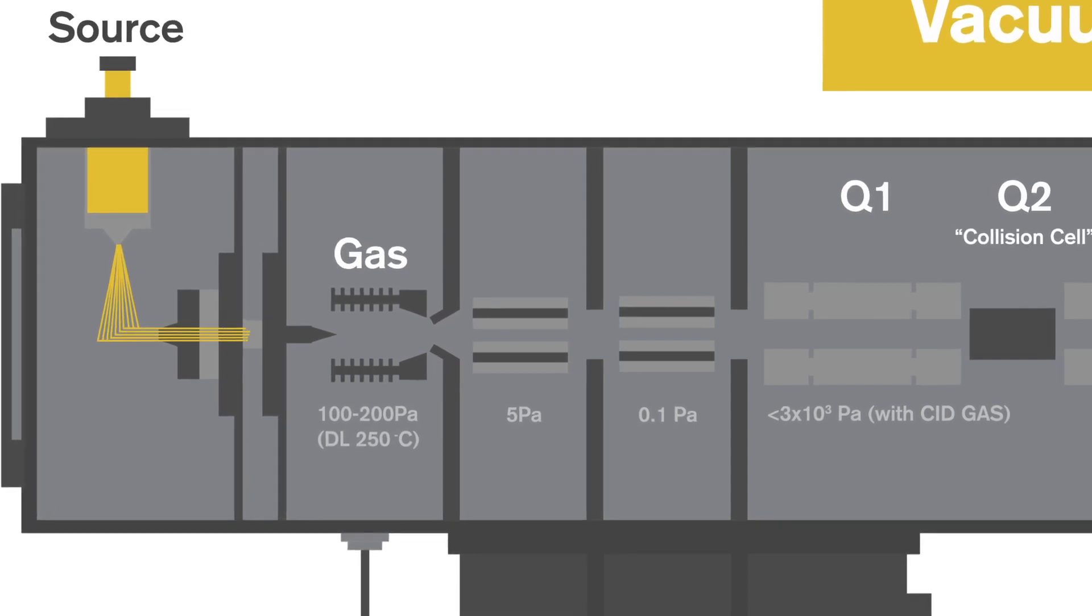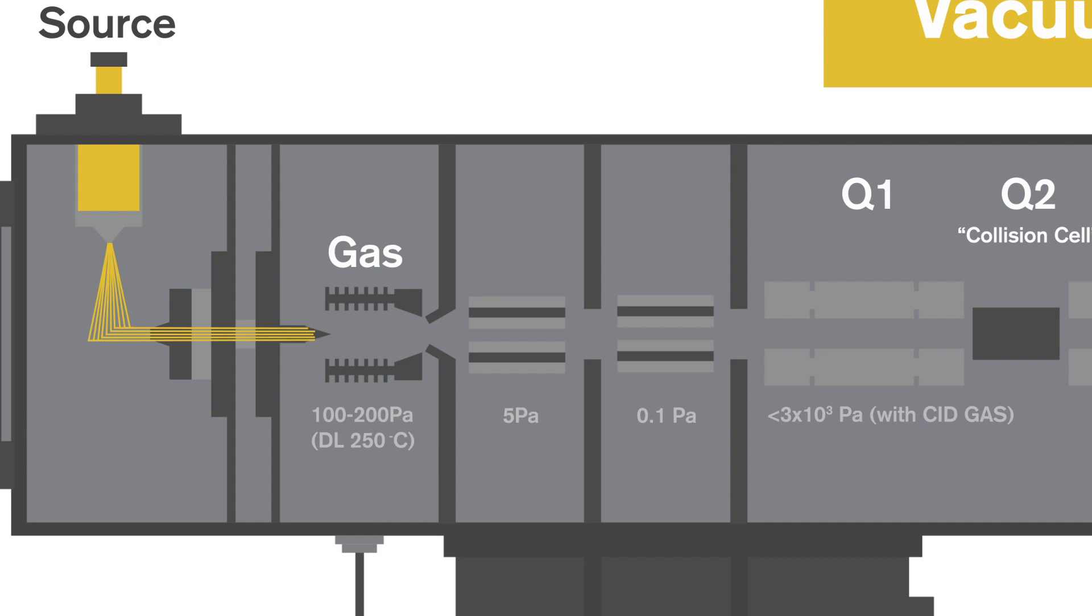The nitrogen carries the ionized analyte through the hot interface, a metal block that is 350 degrees Celsius, which is perpendicular to the capillary. The sample is carried by gas through the rest of the MS.